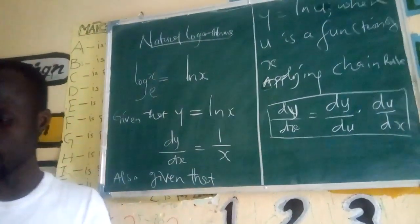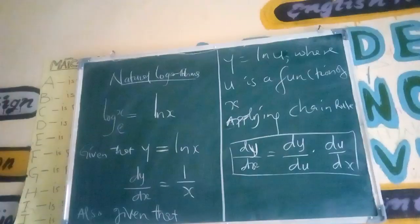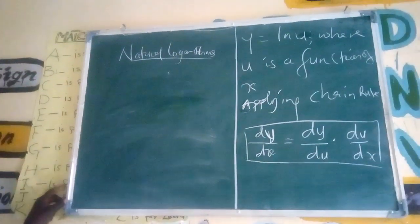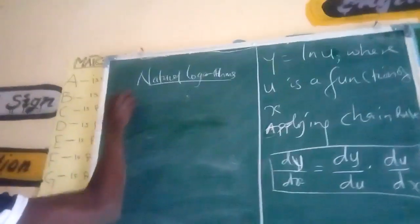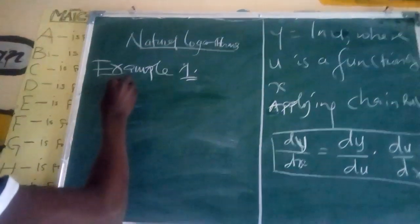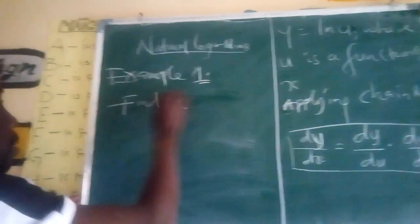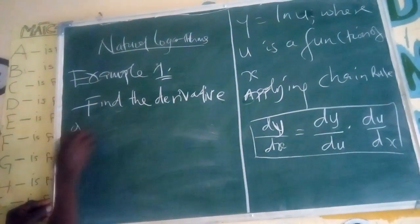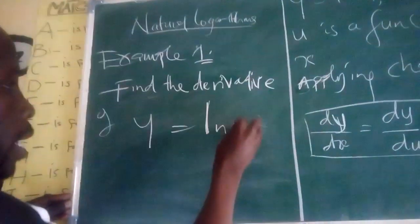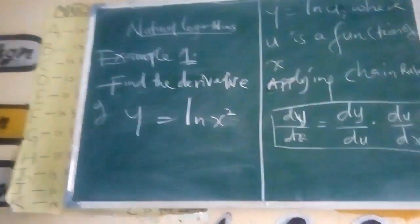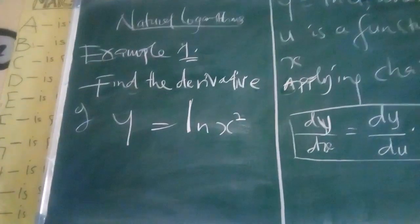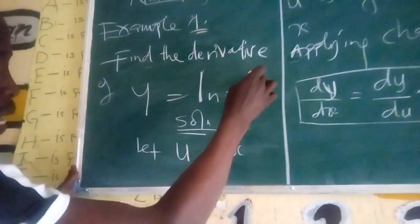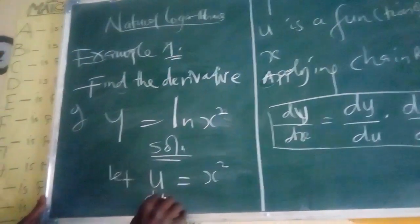Now let's see how we can solve this problem. Find the derivative of y equals ln(x squared). We let u equal x squared, and then find du with respect to x.